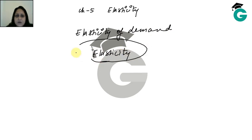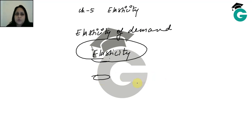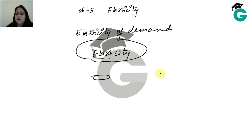But before that, let's talk about what the term elasticity means. You must have seen a rubber band — if you pull it, it stretches. After one point, if you stretch it too much, it will break. Every rubber band is different: some have more elasticity and can be stretched more, some have less.